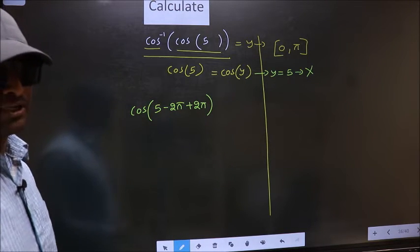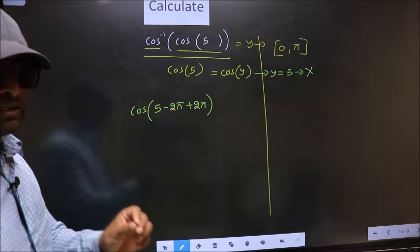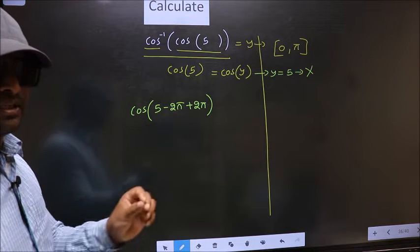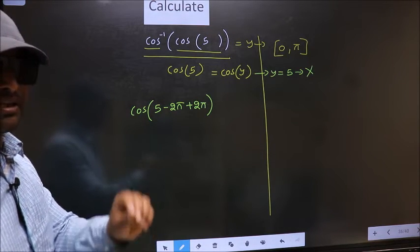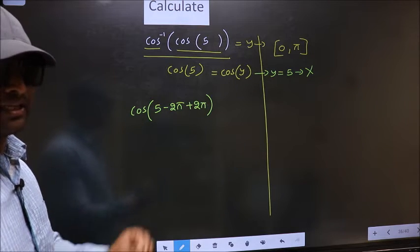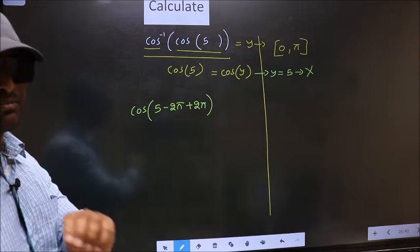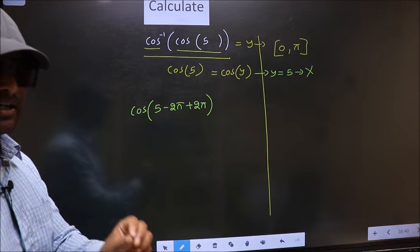Here important point to be remembered. In cos inverse sums we should always subtract only the even multiples of pi. That is 2 pi, 4 pi, 6 pi like that. Remember this.